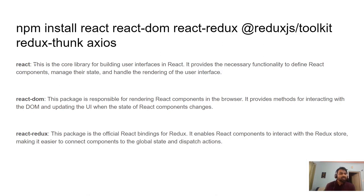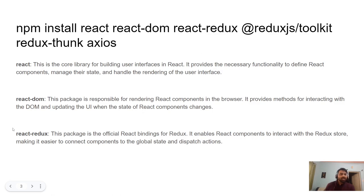React is the core library for building user interfaces. It provides necessary functionality like components, managing state, and handling rendering. React-DOM is responsible for rendering React components in the browser — it provides methods for interacting with the DOM and updating the UI when the state of a React component changes.